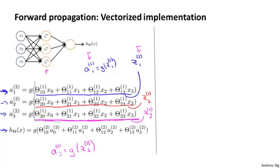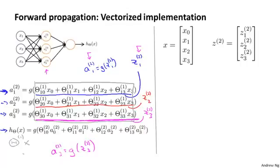Now, if you look at this block of numbers, you may notice that that block of numbers corresponds suspiciously similar to the matrix vector operation, matrix vector multiplication of theta1 times the vector x. Using this observation, we're going to be able to vectorize this computation of the neural network. Concretely, let's define the feature vector x as usual to be the vector of x0, x1, x2, x3, where x0 as usual is always equal to 1.